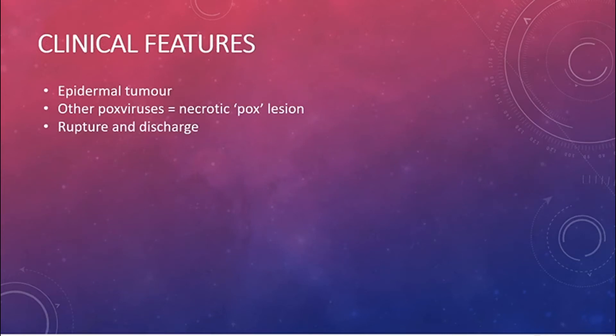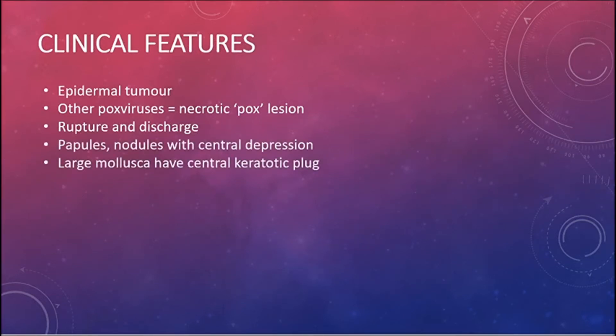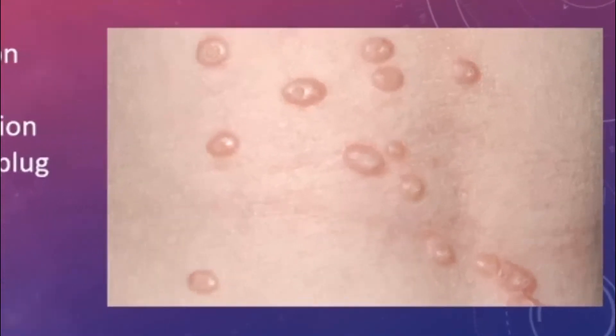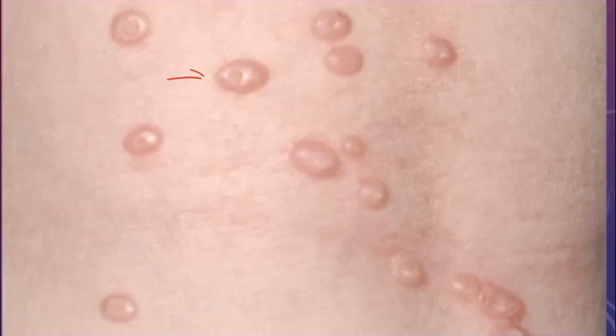Features are papules, tiny bumps, nodules, and tumors with central depression. They are skin-colored. The larger ones may have a central keratotic plug which gives the lesion a central dimple or umbilication.